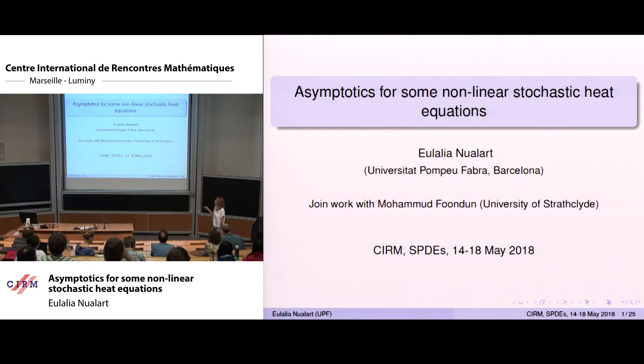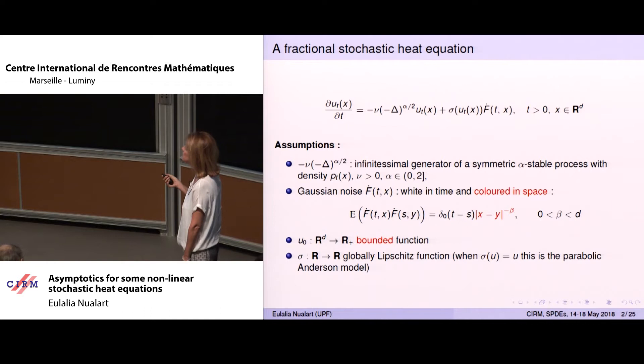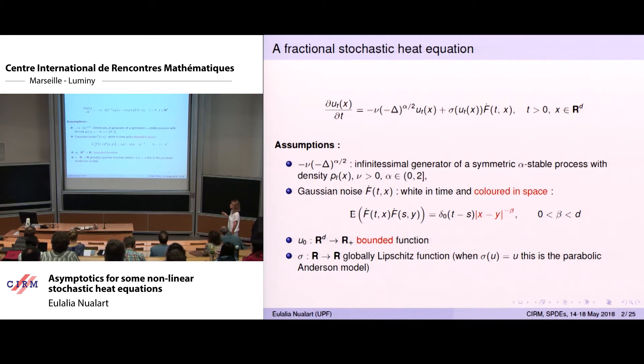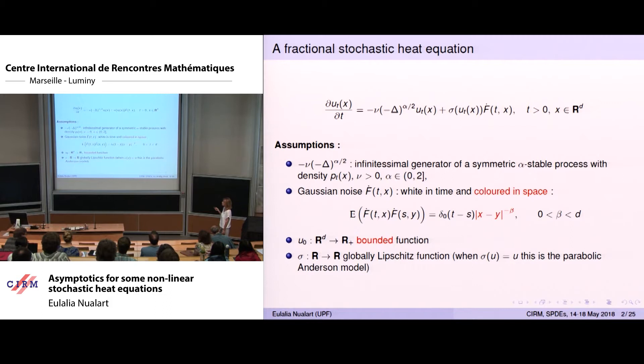Let me first introduce the equation we are interested in studying. This is a heat equation with a fractional Laplacian, which is the infinitesimal generator of a symmetric alpha-stable process, and the density is denoted by p. Alpha is between 0 and 2, so the usual Laplacian is alpha equal to 2, which is included. The noise is multiplicative and white in time with a correlation in space, since x is in d dimensions.